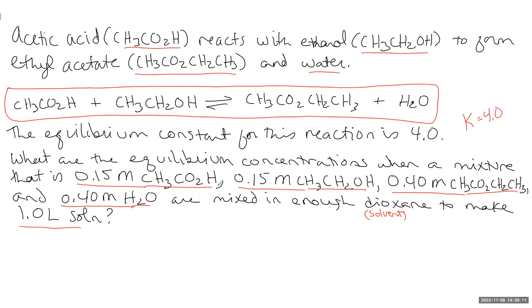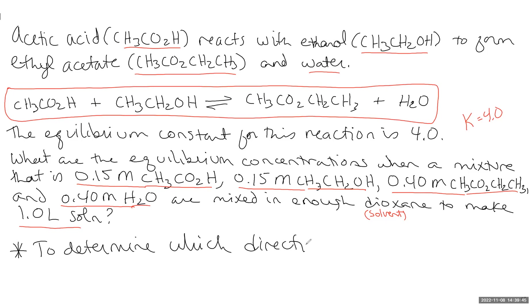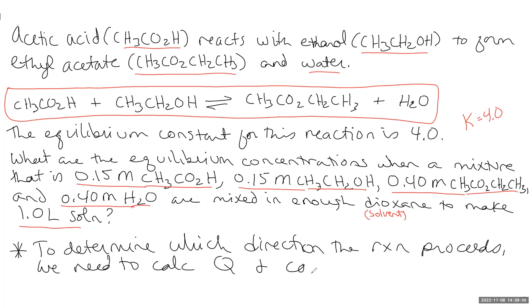One thing that makes this problem difficult compared to others is that all species are present from the beginning — no component starts with zero concentration. That means we don't automatically know which direction the reaction will go. So we need to calculate the reaction quotient Q and compare it with the equilibrium constant K to determine which direction the reaction proceeds.